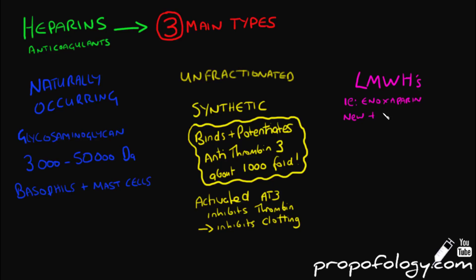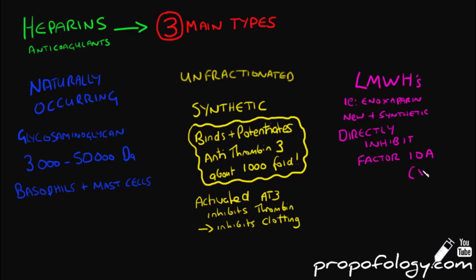Low molecular weight heparins like enoxaparin are synthetic molecules that are relatively new. They directly inhibit factor 10a and are much smaller molecules at around 2,000–8,000 daltons, and therefore they are unable to potentiate antithrombin 3 or bind thrombin like unfractionated heparin can.